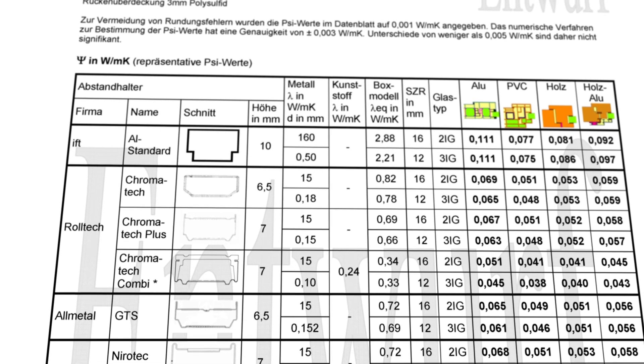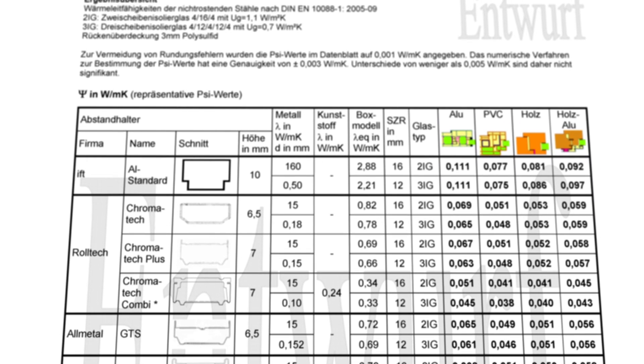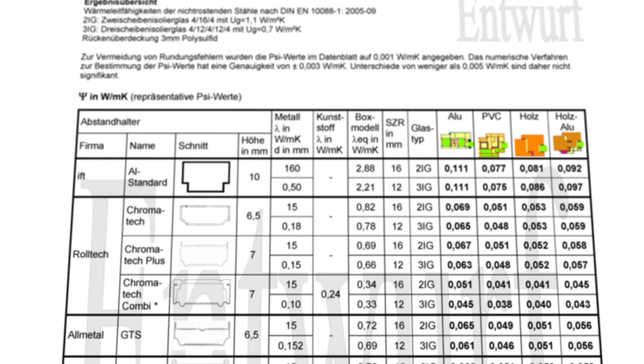So make sure you go into your glass configuration in Shukal and choose the spacer you are actually using — or the one you need to tell your glass supplier that you want to use to reach your desired u-value. As you can see on the screen here is a table from Rosenheim, a research institute, where they have collected various spacers from different suppliers and summarized the psi-value calculations in different window materials like aluminium, wood, PVC, etc. And here you can see that there's a big span of psi-values depending on what spacers you use.